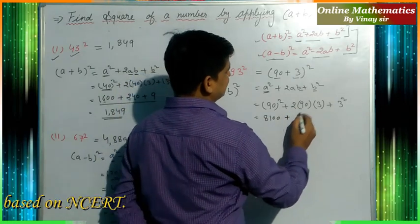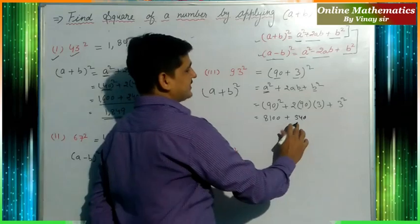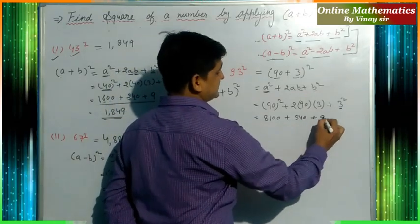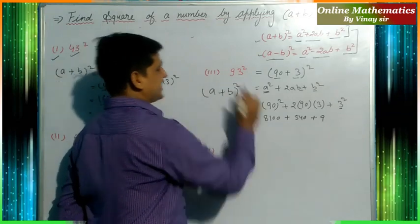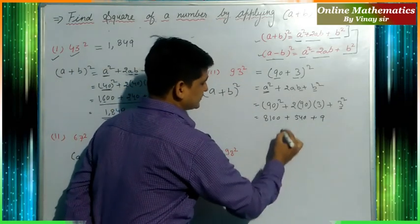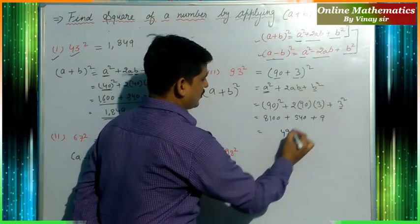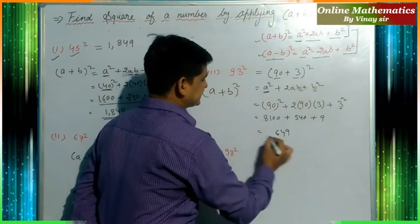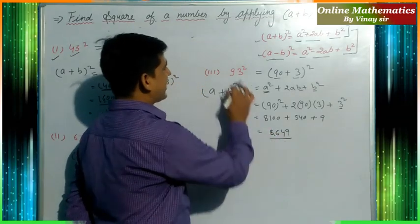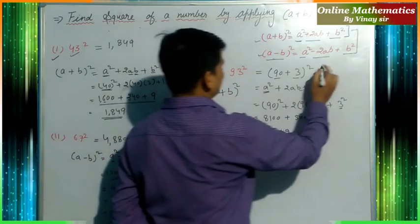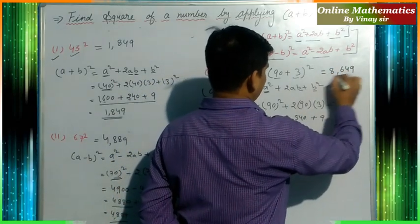Continuing with 93²: 2×90×3 gives 540, and 3² is 9. Adding 8100 + 540 + 9, we get 8649. So 93² = 8649.